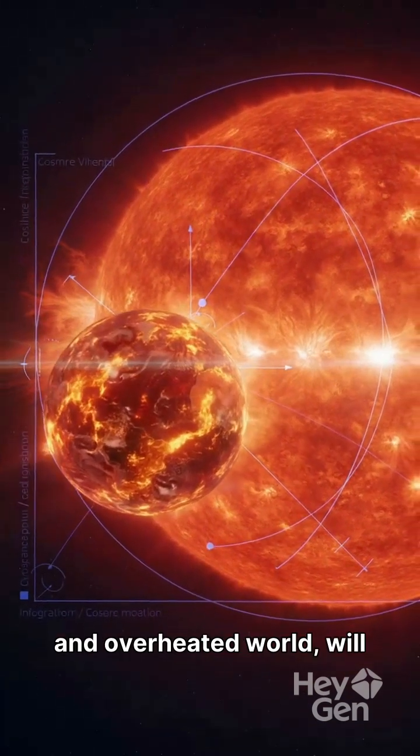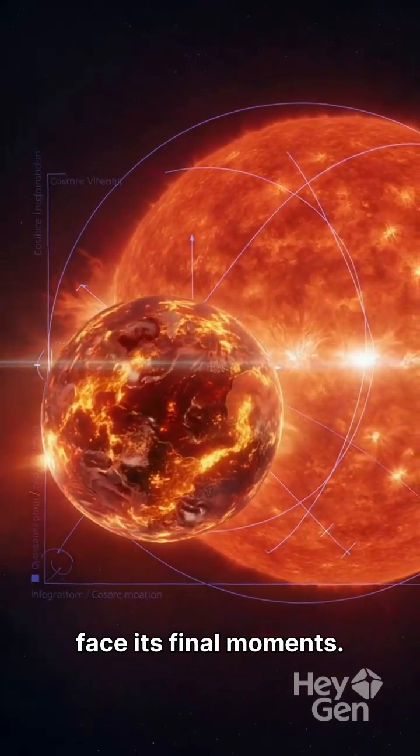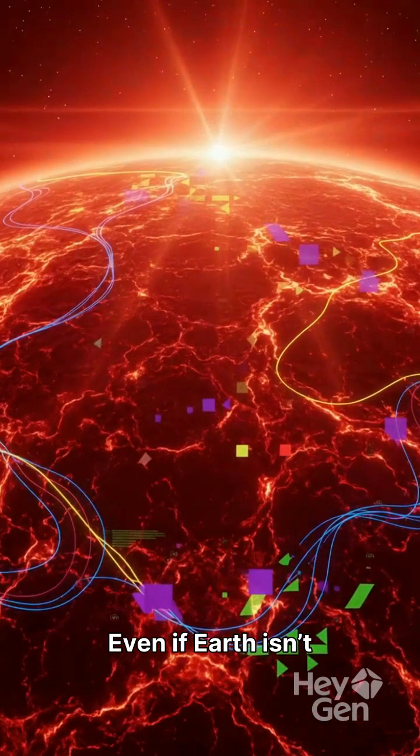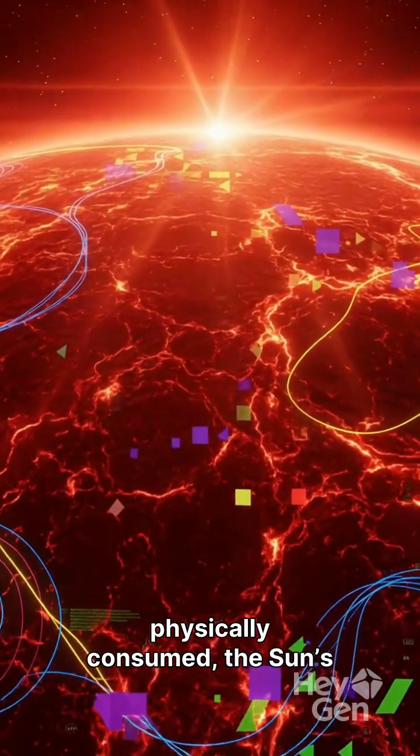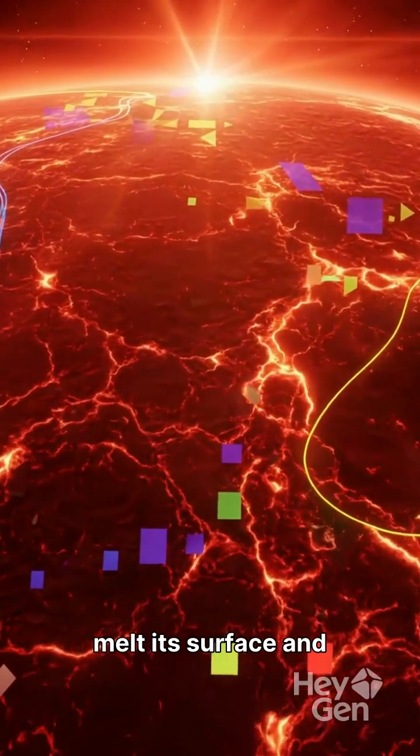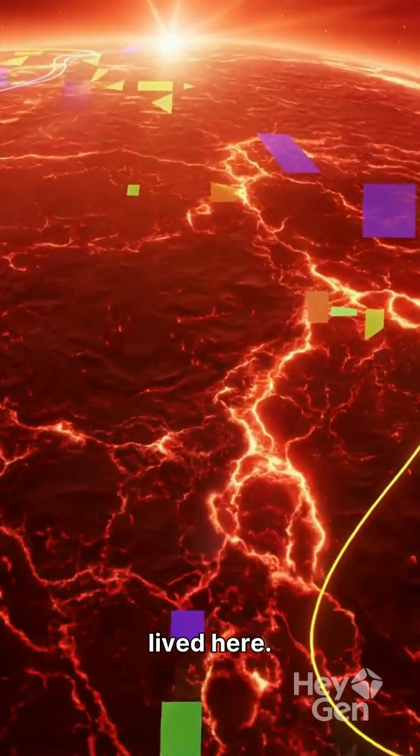Earth, now a dead and overheated world, will face its final moments. Even if Earth isn't physically consumed, the Sun's intense heat will completely melt its surface and destroy everything that once lived here.